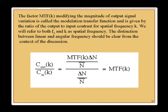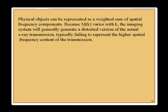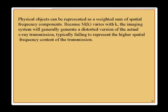There is a difference between linear and angular frequency. Physical objects can be represented as a weighted sum of spatial frequency components — a 2D Fourier transform representation, or even a wavelet transform. Since M-sub-K varies with K, you generate a distorted version of the actual object because some high frequencies may be attenuated. You need a system MTF compatible with the task at hand.